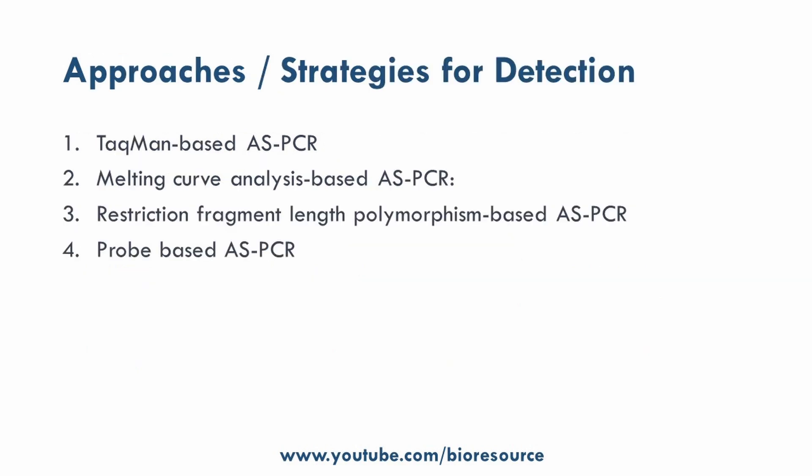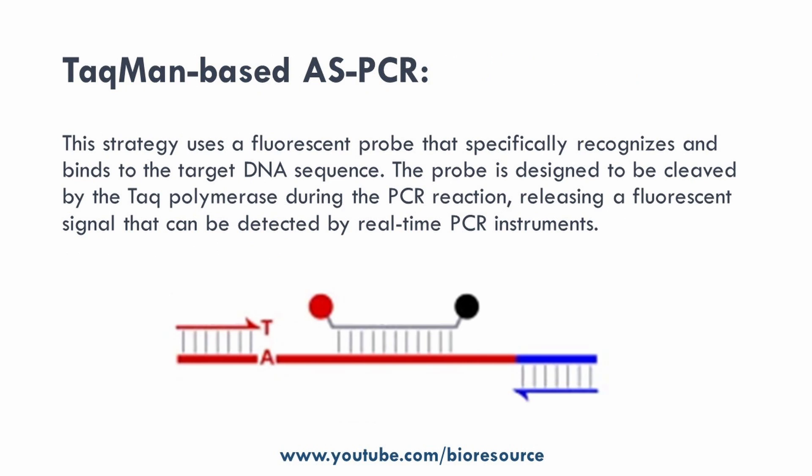There are four main detection strategies. The first is TaqMan-based allele specific PCR. This strategy uses a fluorescent TaqMan probe. The primers are targeting the mutated sequence and the probe is common. The fluorescent probe specifically recognizes and binds to the target DNA and gets cleaved during amplification. If there is a perfect match and a mutant primer is present, the reaction will amplify and give out the PCR signal.